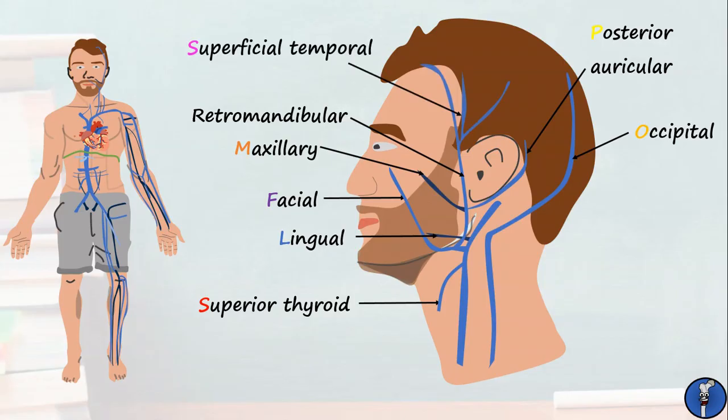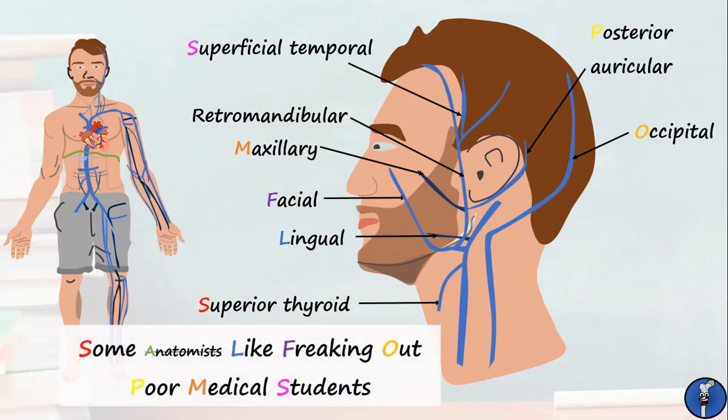There's a lot to remember here. We can help out by using the same mnemonic as for the branches of the external carotid artery, but we must remember that most textbooks don't consider there to be an ascending pharyngeal vein, so let's leave this out.